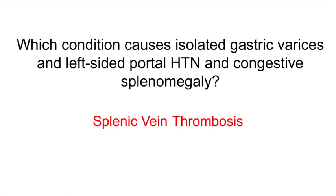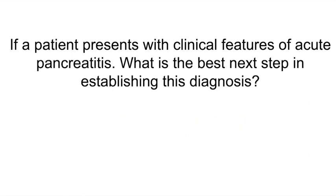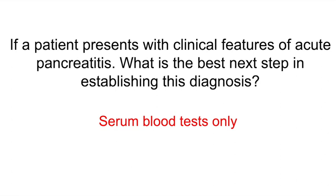If a patient presents with clinical features of acute pancreatitis, what is the best next step in establishing this diagnosis? Serum blood tests only. Two of the three criteria are required to diagnose acute pancreatitis: first, acute onset of persistent severe epigastric pain; second, elevation of serum lipase or amylase greater than three times the upper limit of normal (lipase is more specific); and third, characteristic findings of pancreatitis on imaging such as contrast-enhanced CT scan or MRI.